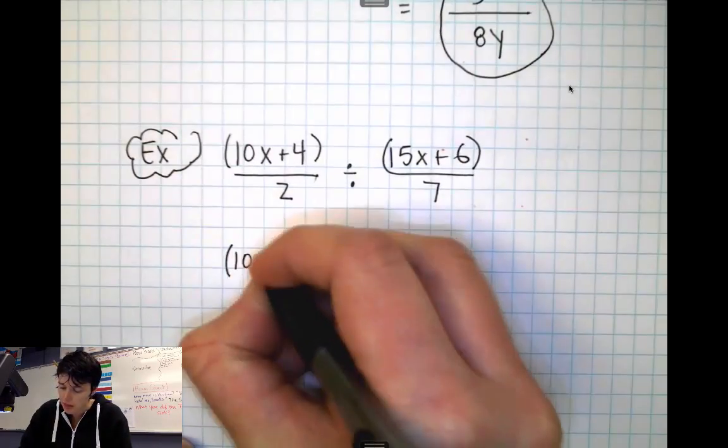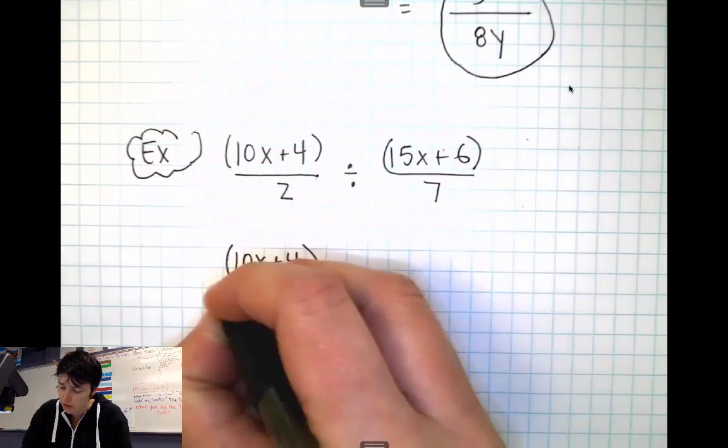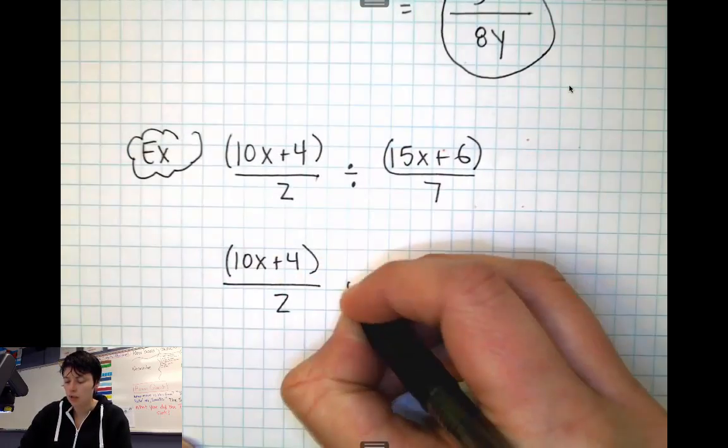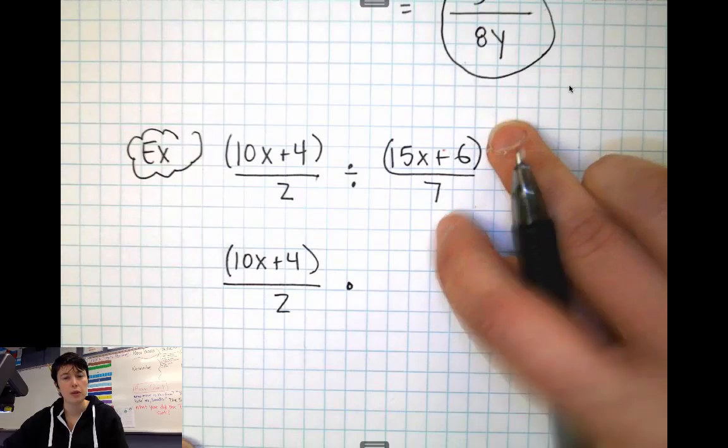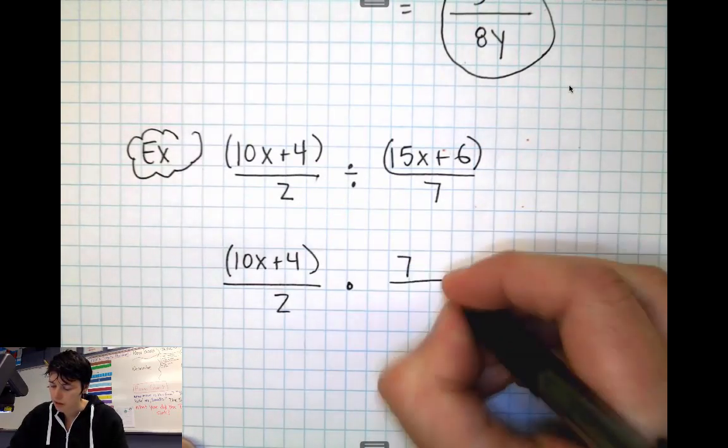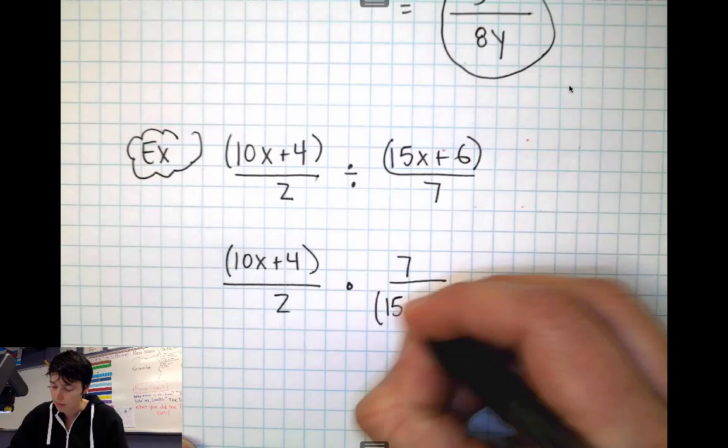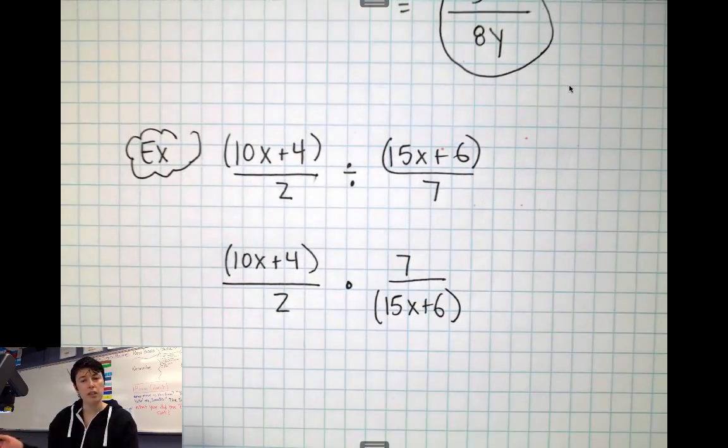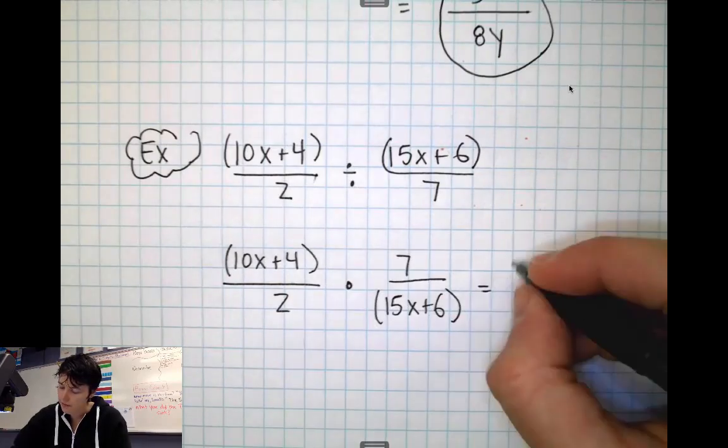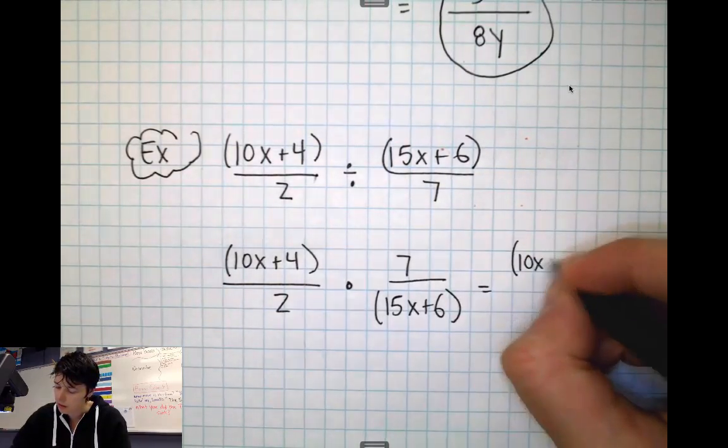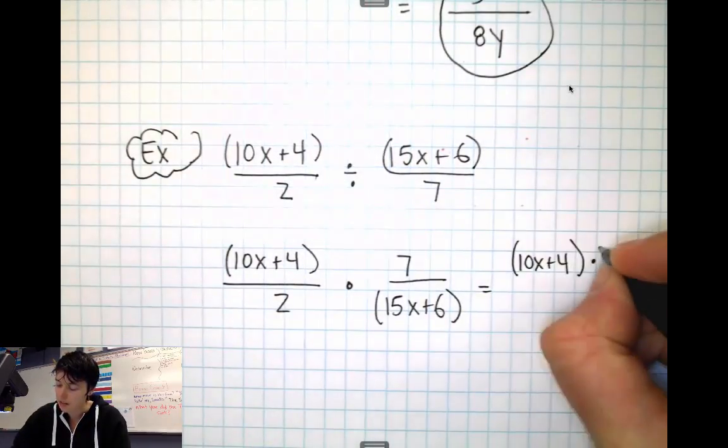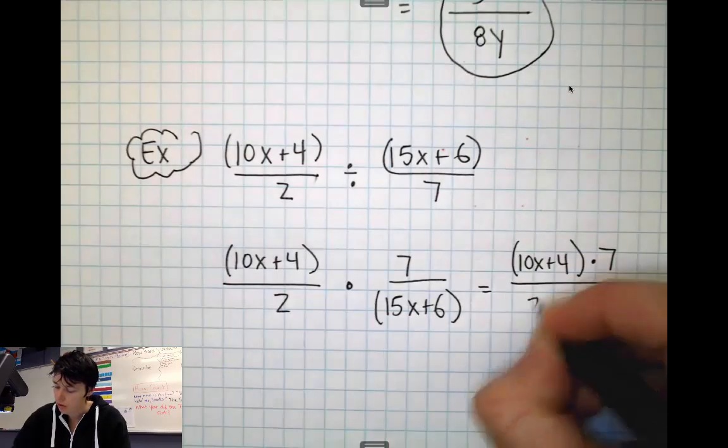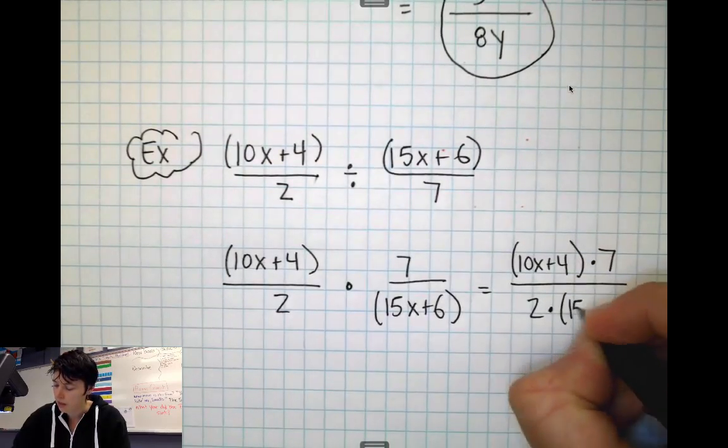So I'm going to keep the first fraction, keep that one the same, (10x+4)/2. And then I'm going to change it to multiplication and I'm going to flip this one over. So I'm going to make it 7 over the group of (15x+6). And now I'm ready to just multiply straight across. So I have (10x+4) times 7 over 2 times the group (15x+6).